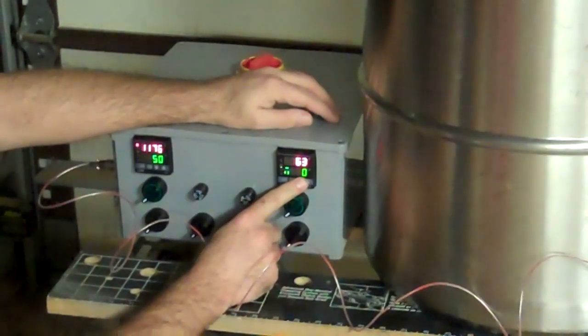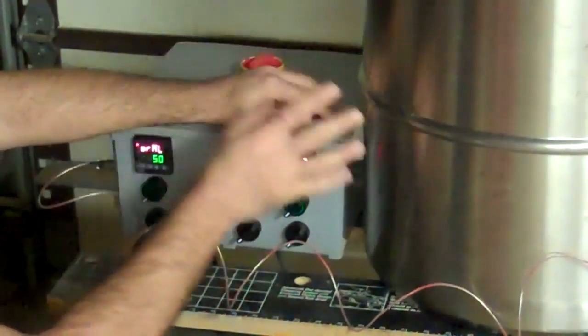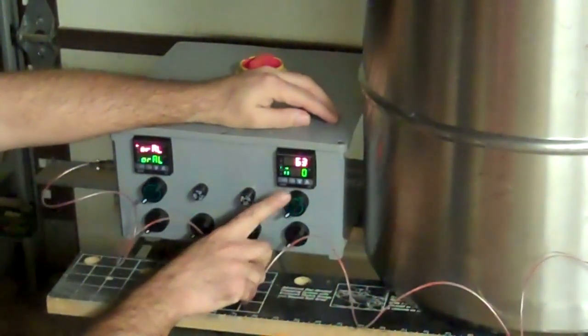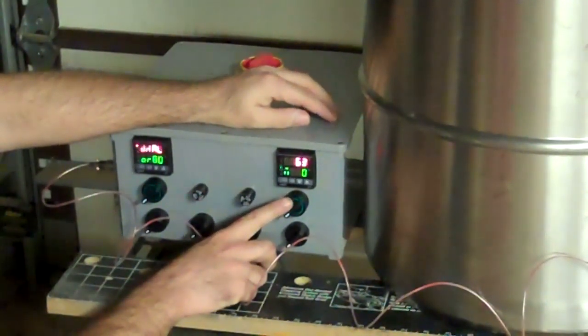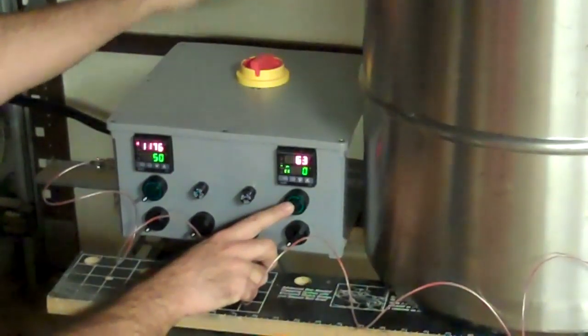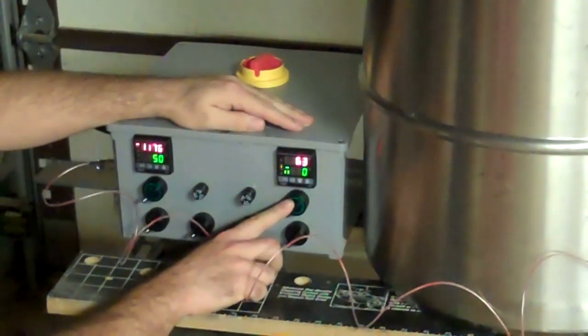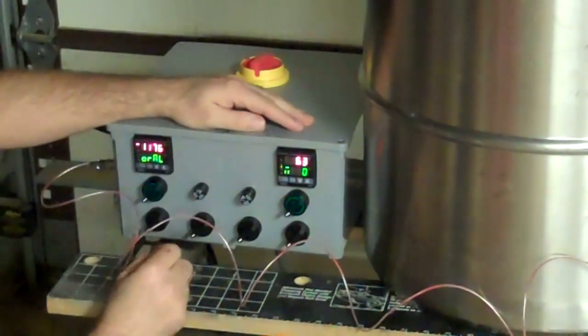So right now it's set at zero, which should mean that we get nothing at the element. This switch runs a relay or a contactor that cuts power entirely to the element. So no matter what this PID is doing, if this switch is off, then there's no power at the element. That's kind of a safety thing.